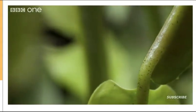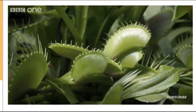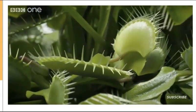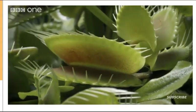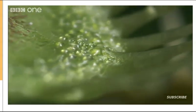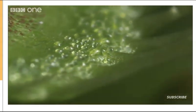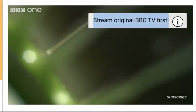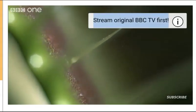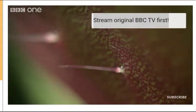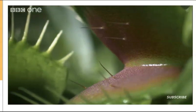The Venus flytrap, like the sundew, makes itself very attractive, oozing nectar across the brim of each leaf. But any visiting insect had better watch out for these six tiny hairs.